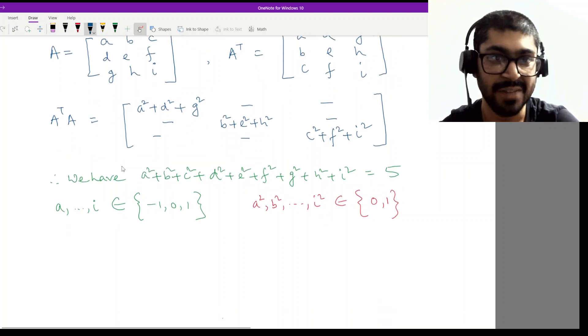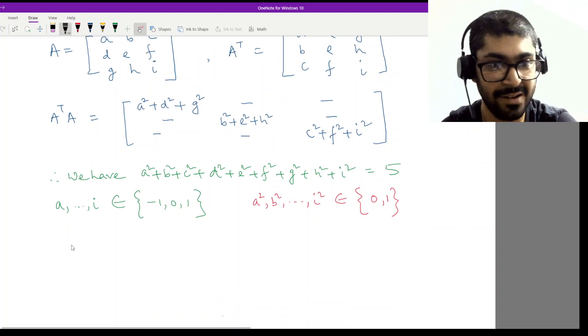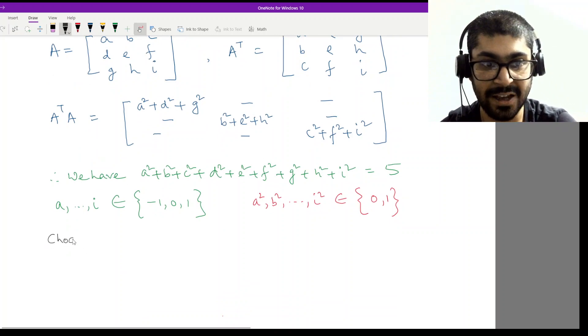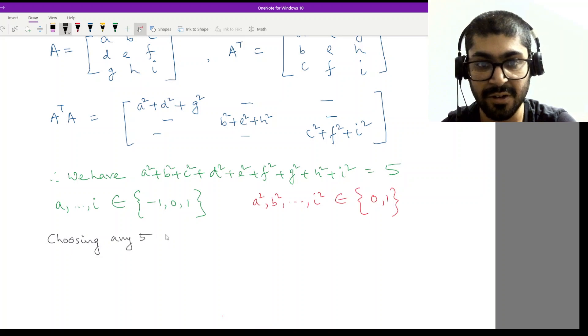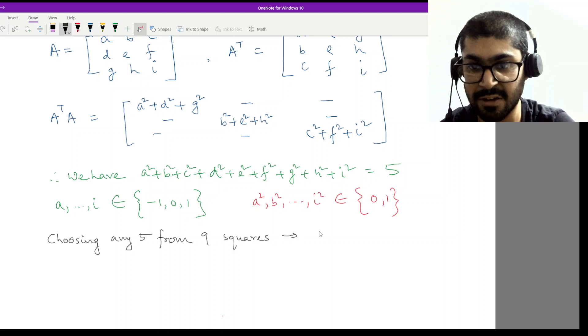That's basic 9 choose 5, right? Choosing any five from nine squares. That will be 9C5.